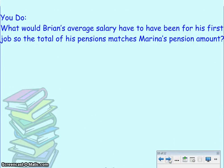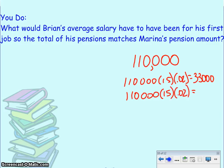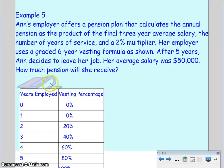What would Brian's average salary for his first job have needed to be for the total of his pensions to match Marina's $66,000? For them to match, his first job's last three years would also have had to average $110,000 — giving $110,000 × 15 × .02 = $33,000 — and combined with $33,000 from his current job, that totals $66,000. This is unlikely, though, since people typically earn less earlier in their careers.